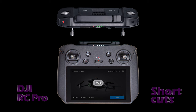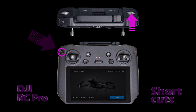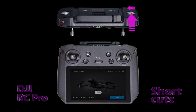Push and hold the back button and rotate the gimbal dial to the right to increase screen brightness, or rotate it to the left to decrease brightness. The brightness adjusts in increments of 25 percent each time you rotate the dial. Adjusting the speaker volume is very similar, except it uses the camera control dial, located on the right on top of the RC Pro. Rotate it right to increase volume or left to decrease. The volume adjusts in 20 percent increments, with all the way down being muted.